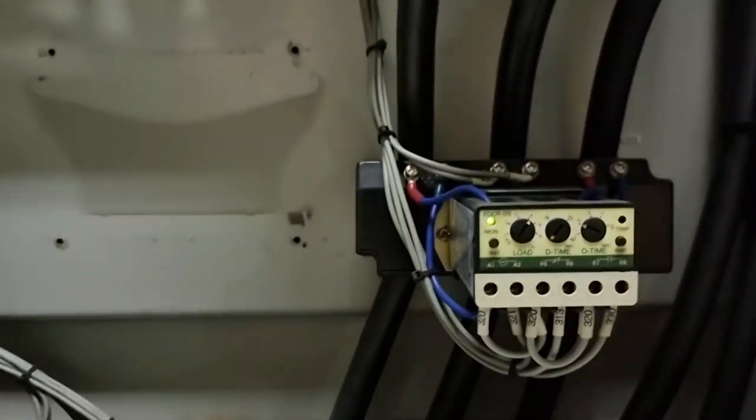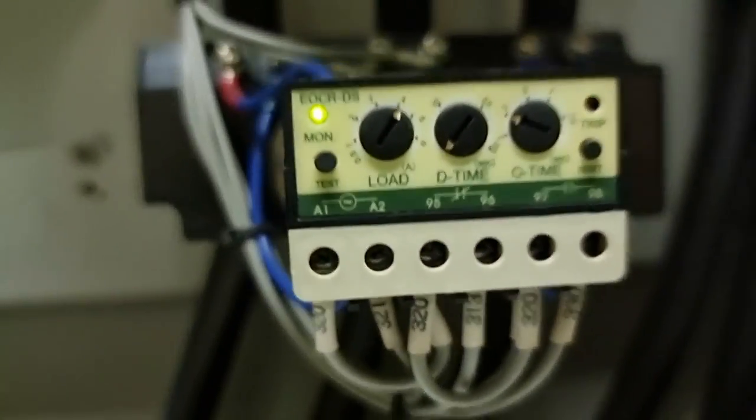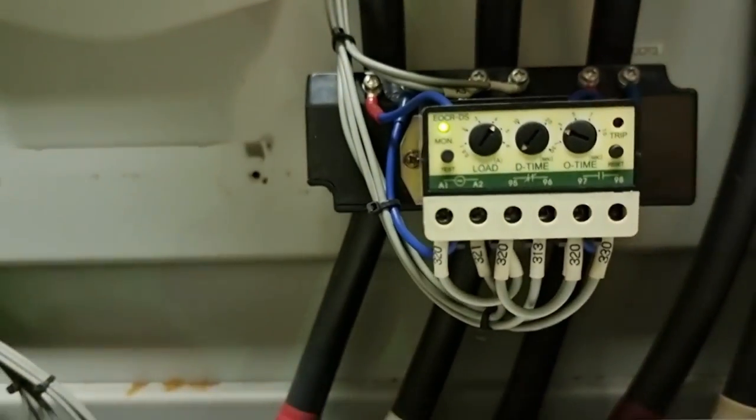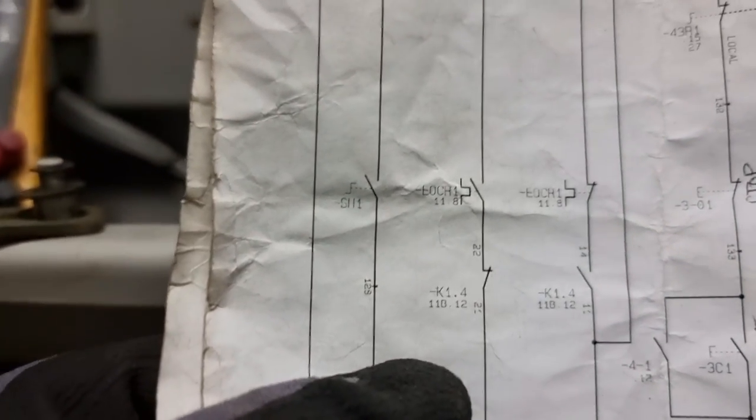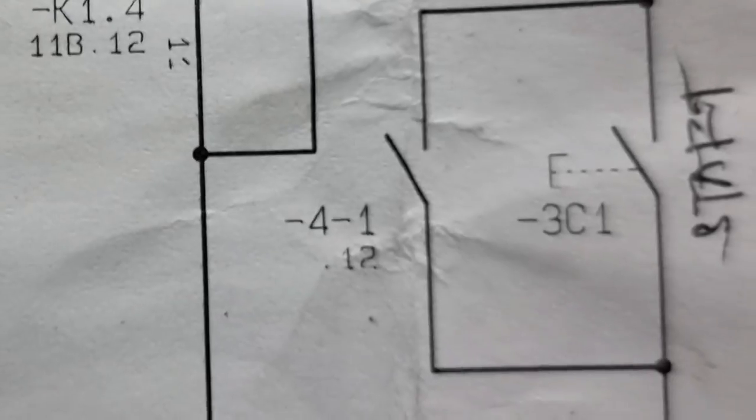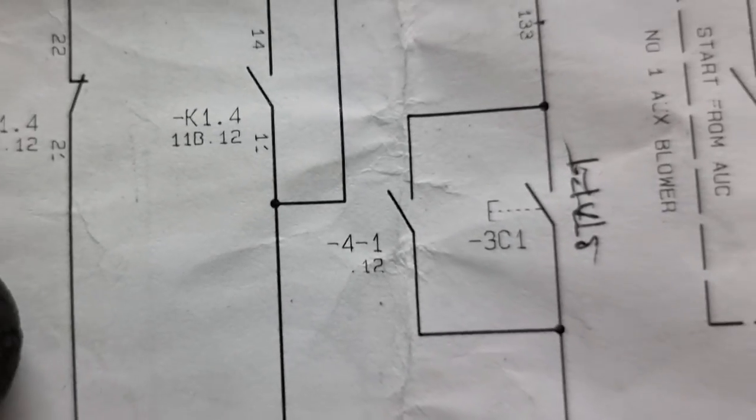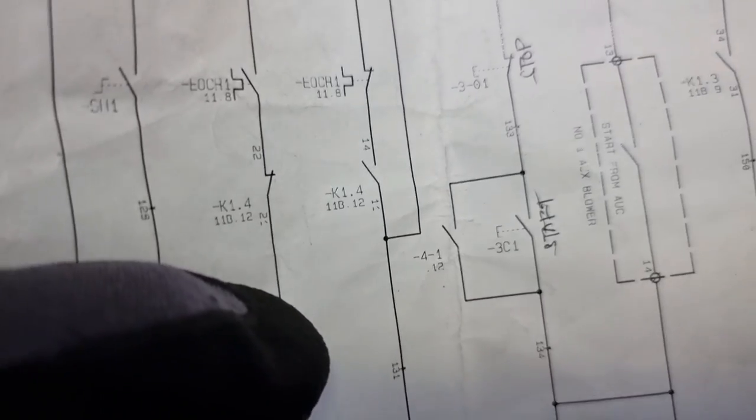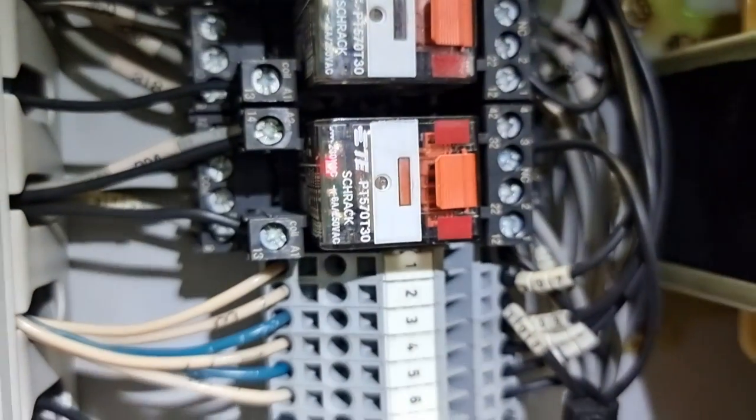But before that, we need to check the EOCR if it is tripped or in good condition. We can verify that the EOCR is in good condition. Let us check the K1.4 if it is OK or not. The K1.4 is activated, and it means that terminal 11 and 14 should be in closed position.